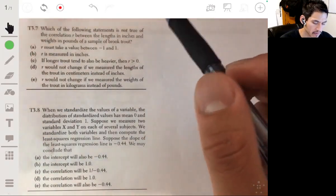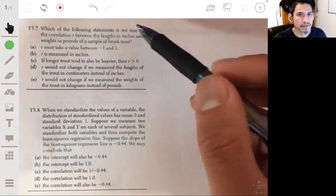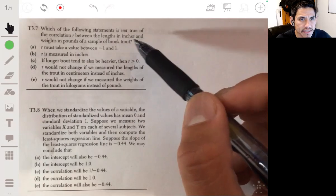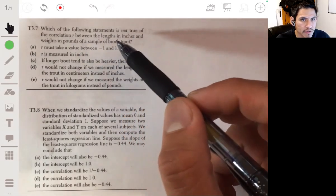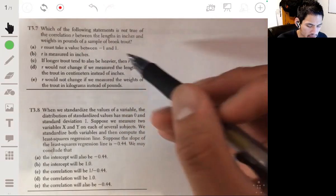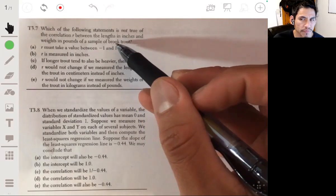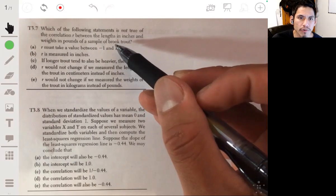All right, so let's pick up on problem seven, asking which of the following statements is not true of the correlation R between the lengths in inches and the weights in pounds of a sample of brook trout. For brook trout, I assume that's some sort of fish. I'm not a fisherman, but that's what I will go with.